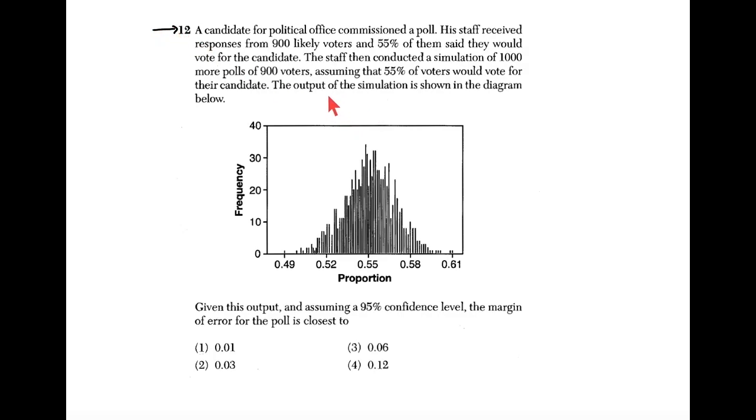A candidate for political office commissioned a poll. His staff received responses from 900 likely voters and 55% of them said they would vote for the candidate. The staff then conducted a simulation of a thousand more polls of 900 voters, assuming that 55% of voters would vote for their candidate. The output of this simulation is shown in the diagram below. And given this output, and assuming a 95% confidence level, the margin of error for the poll is closest to what?